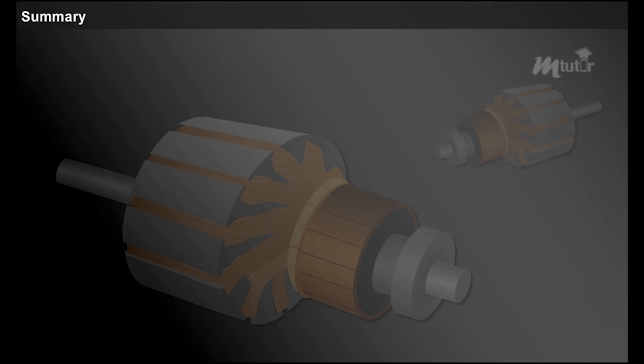This brings us to the end of the lesson. In this lesson we have learnt about lap and wave windings, equalizer rings, and dummy coils.